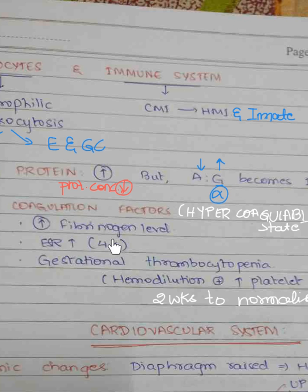A systolic murmur may be heard during pregnancy in the apical or pulmonary area. There may also be a mammary murmur in the tricuspid area. ECG changes show left axis deviation or sometimes normal deviation. The systolic murmur in the apical or pulmonary area is due to hemodilution and decreased viscosity of blood. The mammary murmur is felt at the second or third intercostal space due to increased blood flow through the internal mammary vessels.